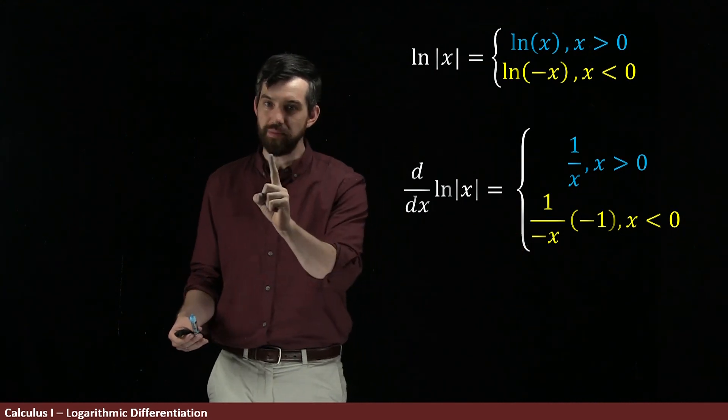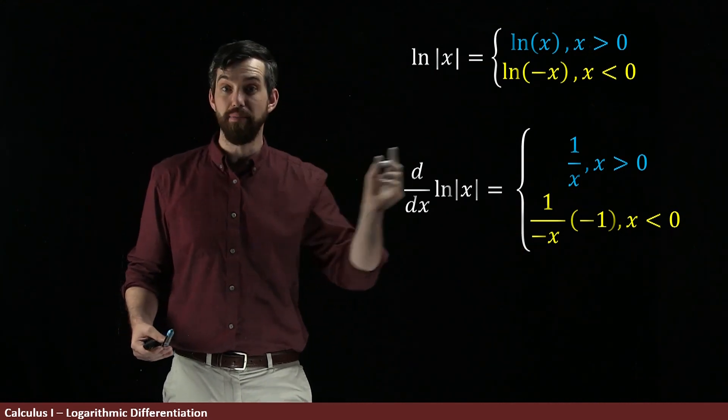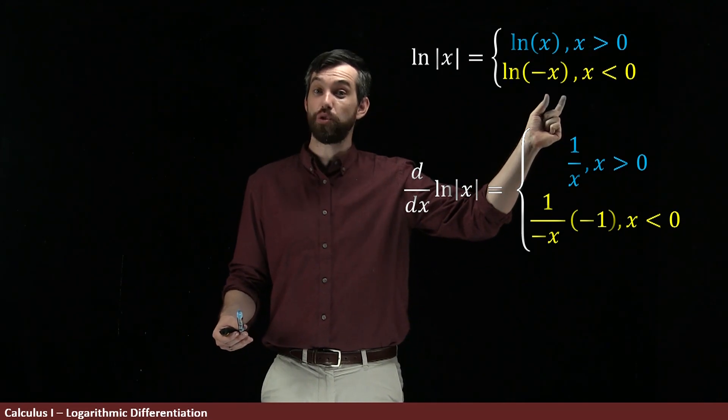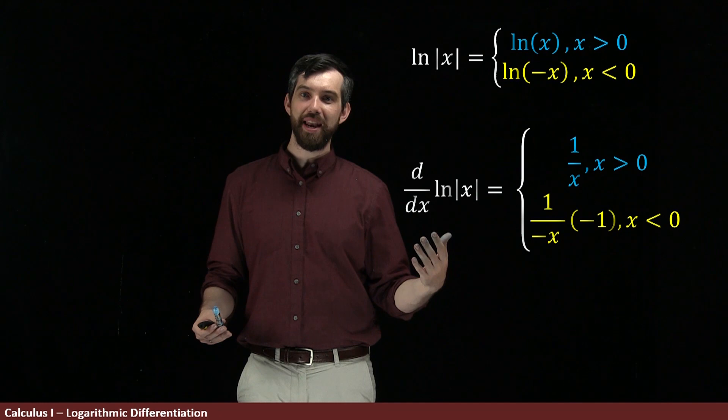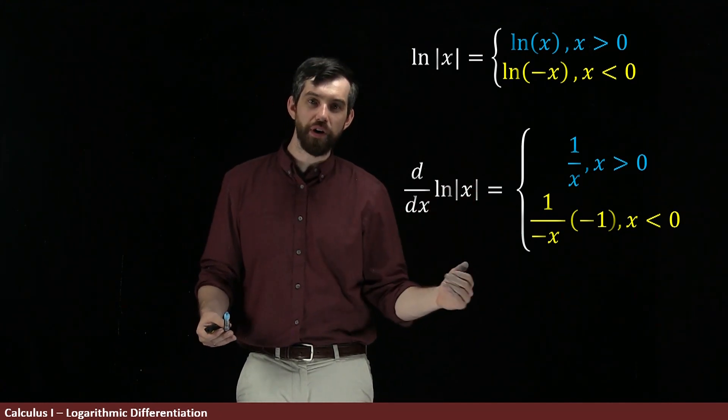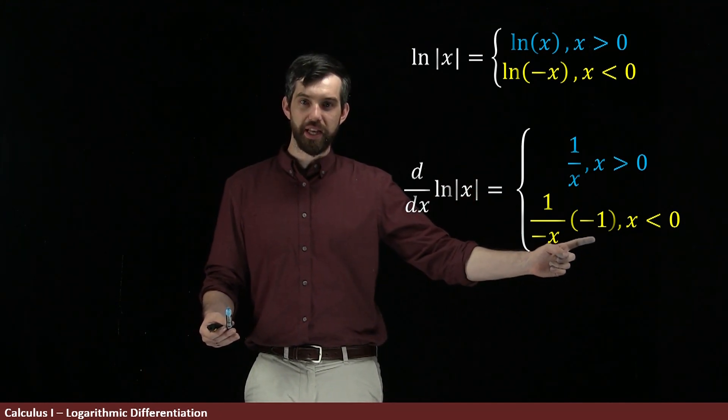1 divided by minus x, times the derivative of the inside. The derivative of the inside is minus 1 because the derivative of minus x is minus 1. So what we get is the derivative of the outside is 1 over the inside times the derivative of the inside.